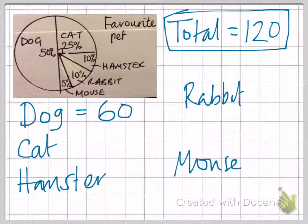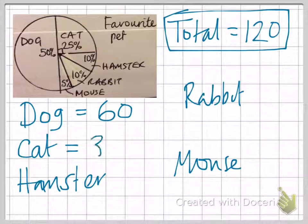The cat is 25%, which is one quarter, so a quarter of 120 would be 30.